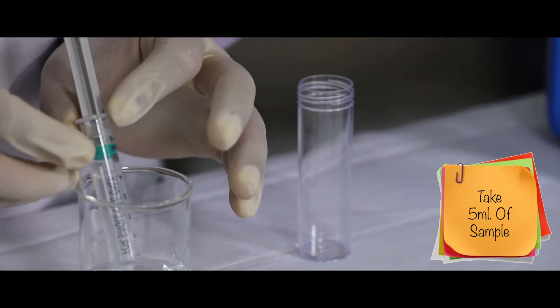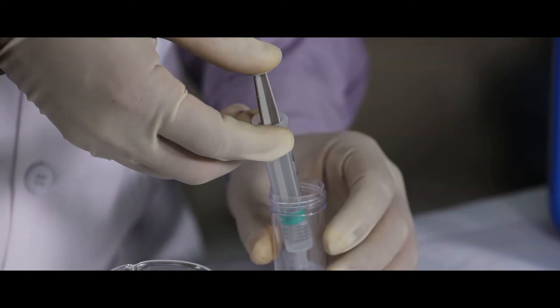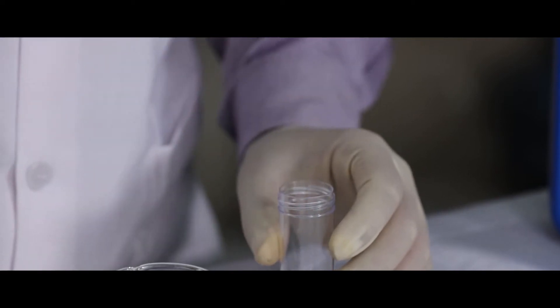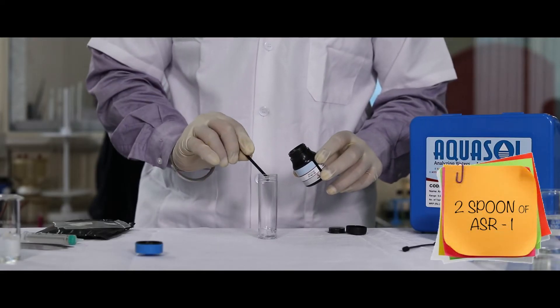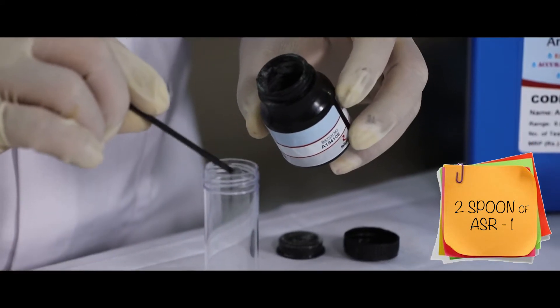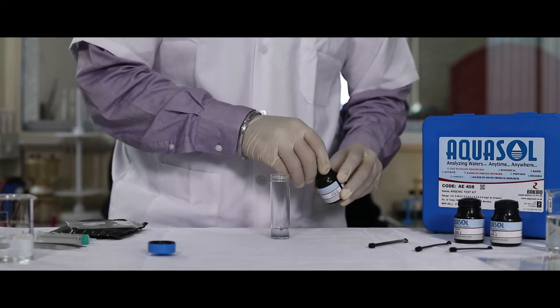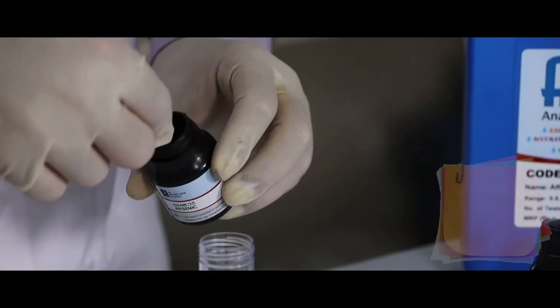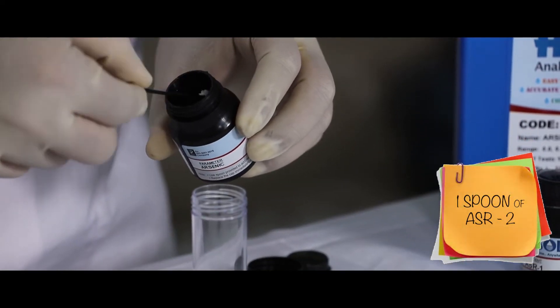Using the syringe, now add two spoonfuls of ASR 1 and one spoonful of ASR 2.